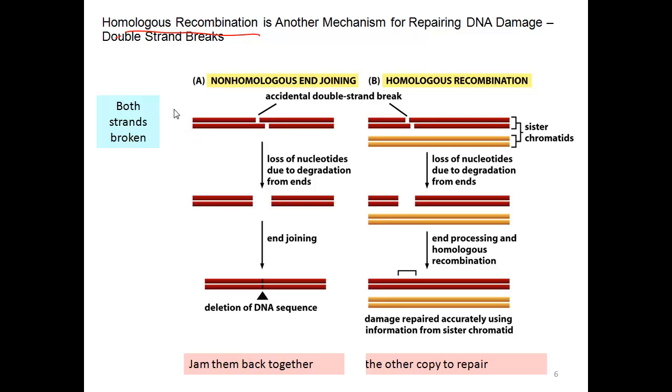The third DNA repair mechanism we'll study is homologous recombination. This is a way that cells repair, most of the time, the most serious of DNA lesions: double-strand breaks when both strands are mutated or damaged.